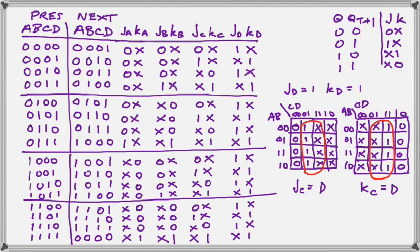The JC and KC, when we have plotted them on the Carnot maps, reduce to just D. Both of them reduce to D.